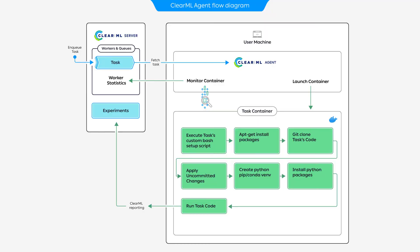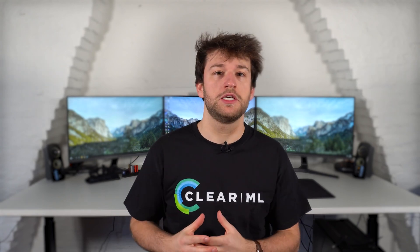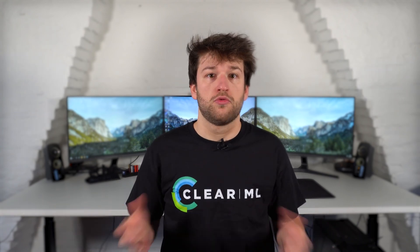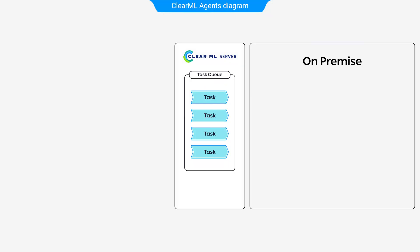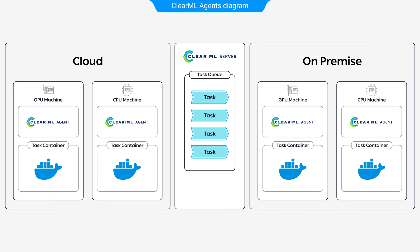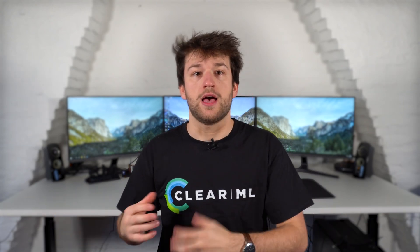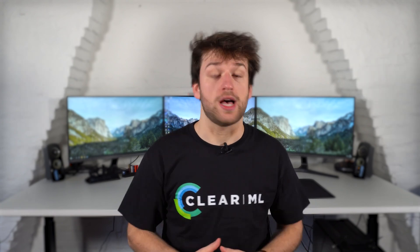The ClearML agent is a daemon that you can run on one or multiple machines and turns them into workers. An agent executes an experiment or other workflow by reproducing the state of the code from the original machine to the remote machine. It's easy to set up an agent on either a CPU or GPU machine, so you can run all of your experiments on any compute resource you have available. If you spin up your agents in the cloud, they'll even support autoscaling out of the box. You can set up multiple machines as agents to support large teams with their complex projects, and easily configure a queuing system to get the most out of your available hardware.